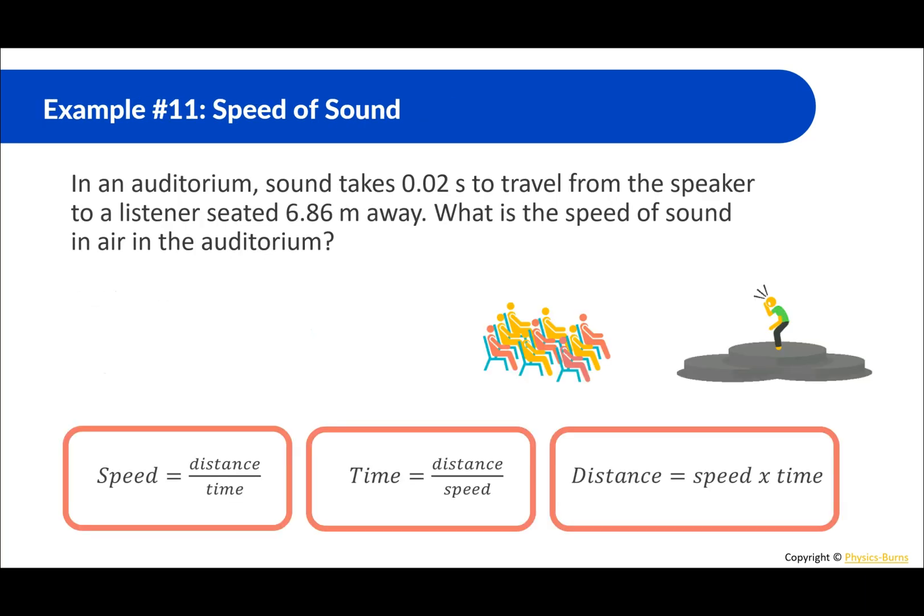We learned about speed and distance and time already, but if you forgot, here's just a little bit of a refresher and the manipulations. Example 11, speed of sound. In an auditorium, sound takes 0.02 seconds to travel from the speaker to a listener seated 6.86 meters away. What is the speed of sound in air in the auditorium? We're just doing speed equals distance over time. Distance is 6.86, the time is 0.02. 6.86 divided by 0.02 equals 343 meters per second.